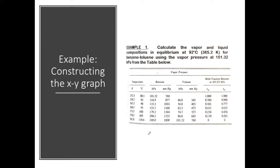To construct the equilibrium curve, we need values of XA and YA. The table gives us XA and YA values, but we must also learn how to calculate these values from real data. In this example, we calculate the vapor and liquid composition at 92 degrees Celsius for the benzene-toluene system using the atmospheric total pressure of 101.32 kPa.